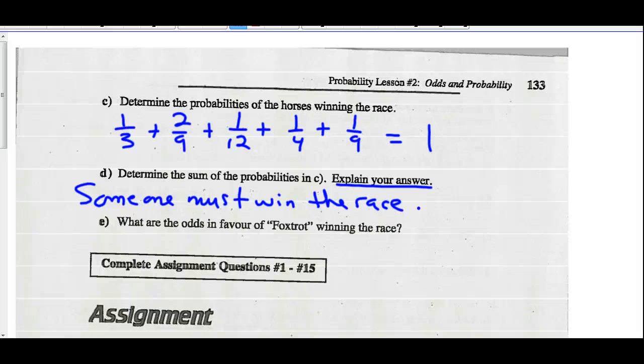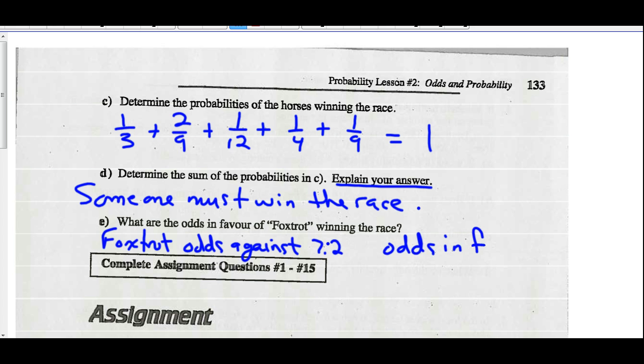Part E. What are the odds in favor of Foxtrot winning the race? So if you look at Foxtrot in the book over there, it had odds against. Odds against were at 7 to 2. Therefore, odds in favor should be 2 to 7.